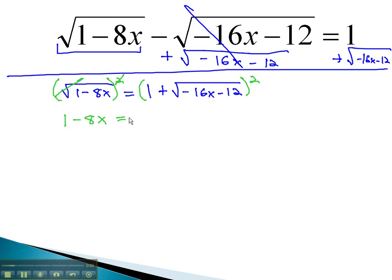On the right side, we technically have a binomial. We square the first term. 1 squared is 1. In the middle, we have the product twice. 1 times the square root plus 1 times the square root is 2 times the square root of the negative 16x minus 12.